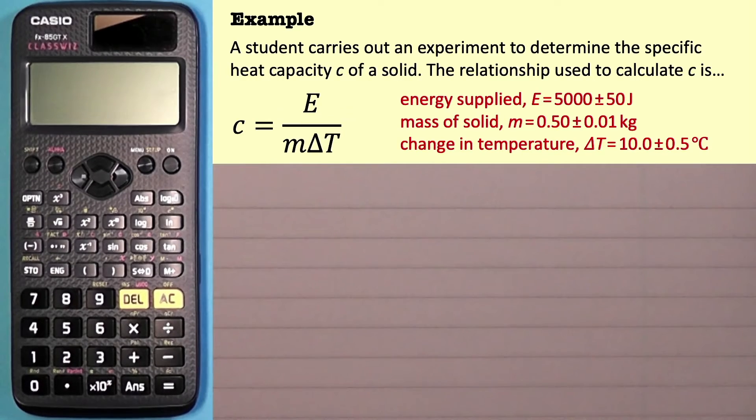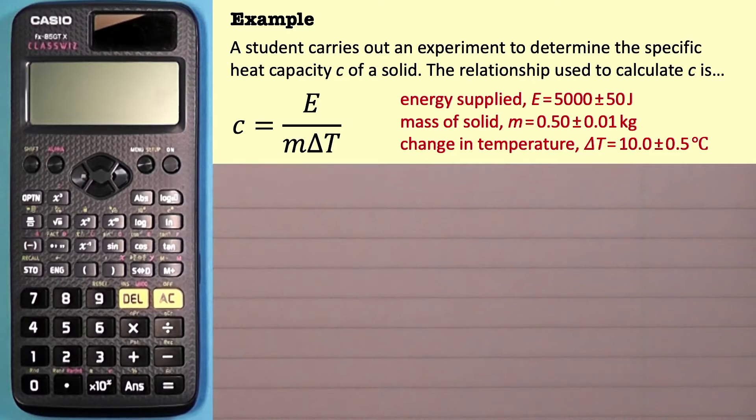The energy supplied E is 5000 plus or minus 50 joules. Mass of the solid M is 0.50 plus or minus 0.01 kilograms. And change in temperature delta T is 10.0 plus or minus 0.5 degrees Celsius.